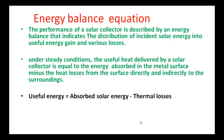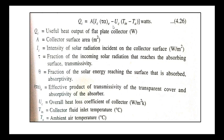Next is the energy balance equation. The useful energy is equal to absorbed solar energy minus thermal losses. The energy balance equation of a flat plate collector is: Qc = A × Ic × (τα)E − Uc × (Tin − Ta), where Qc is the useful heat output of the flat plate collector, A is the collector surface area, and Ic is the intensity of solar radiation.